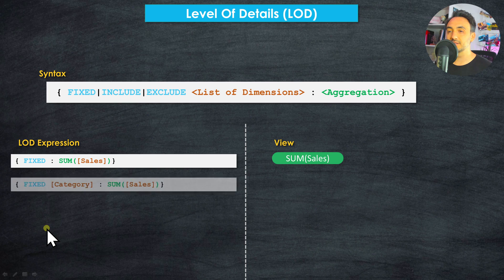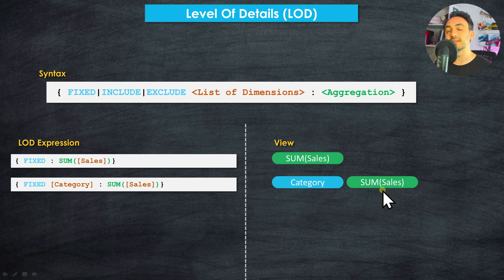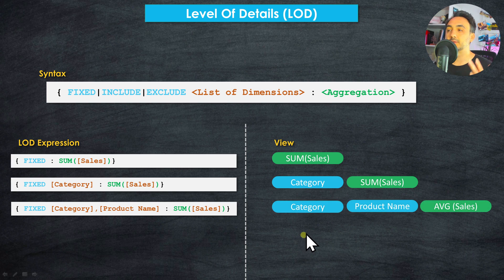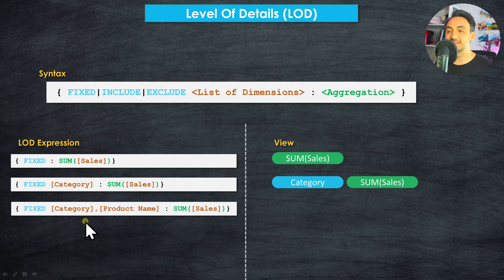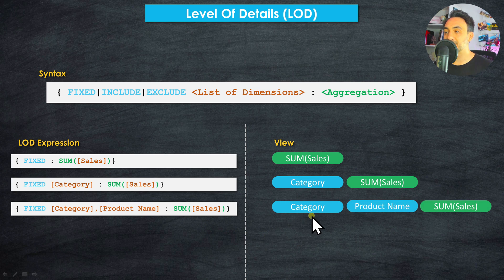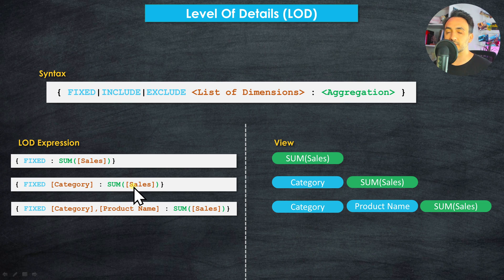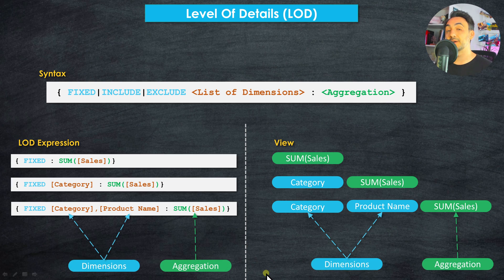Think of building an LOD expression as building any view in Tableau — you always specify dimensions and measures. Adding a dimension like category gives: fixed category, then sum of sales — analogous to a view with the category dimension and the sum of sales measure. You can add more dimensions, such as category and product name. You can also use include or exclude instead of fixed, or use different aggregations like average of sales. Building an LOD expression is very similar to building any view: always define dimensions and aggregations.